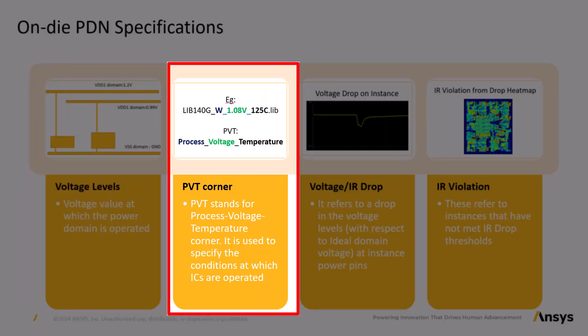Second, PVT corner. PVT stands for process, voltage, temperature, which is used for characterizing IC operating conditions. Process refers to variations in the manufacturing process like transistor sizes, manufacturing tolerance and so on. Voltage refers to the operating voltage of the chip. Temperature refers to the chip's operating temperature. For instance, a low temperature, low voltage in worst case process corner represents a scenario where a chip needs to operate in a very cold environment with a low power supply and lowest transistor performance.